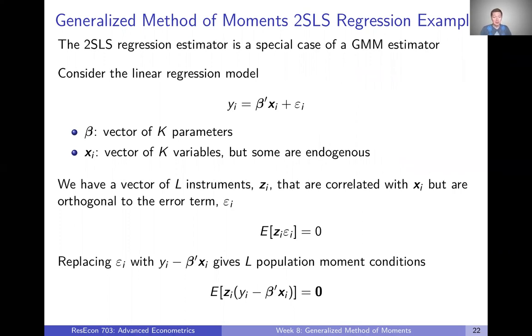We can fix that if we have some exogenous instruments. So let's suppose we have a vector of L exogenous instruments that we're going to call Z, and those exogenous instruments are correlated with X, but they're exogenous, so they're orthogonal to the error term.